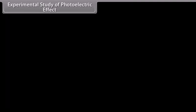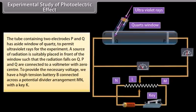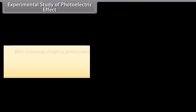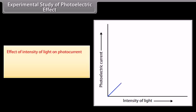In the experimental study of the photoelectric effect, the apparatus contains a tube with two electrodes P and Q, having a side window of quartz to permit ultraviolet rays. A radiation source is placed in front of the window so that radiation falls on Q. P and Q are connected to a voltmeter with zero center to provide the necessary voltage. A high tension battery B is connected across a potential divider arrangement MN with a key K.